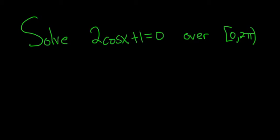Solve 2 times cosine x plus 1 equals 0 over the interval 0 to pi. Solution.